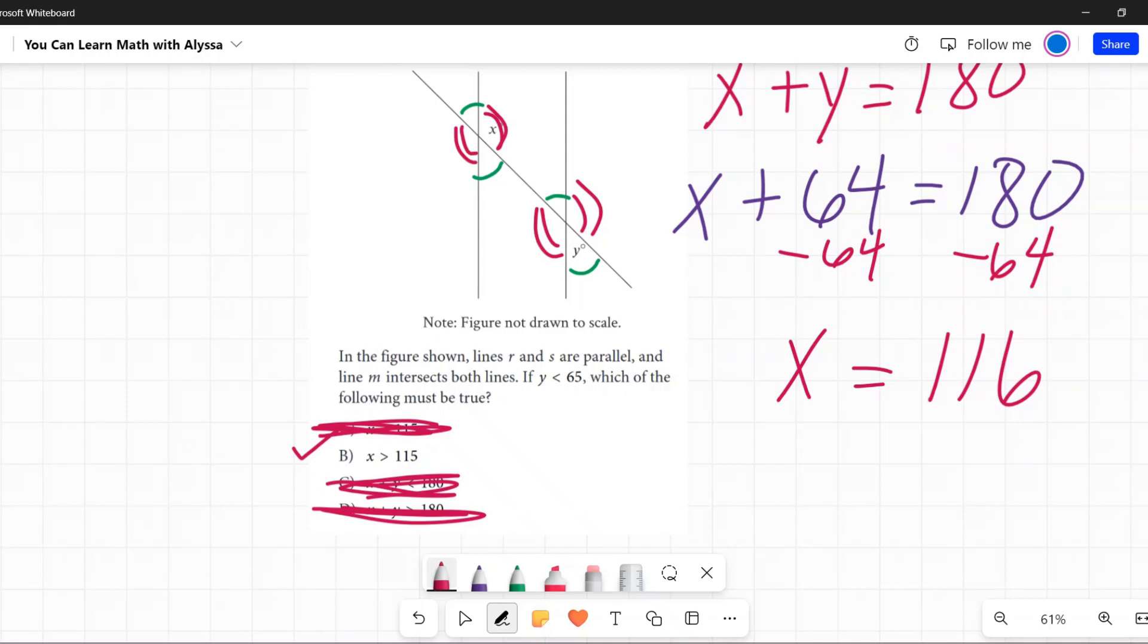You see, these are making up a line. So if y was less than 65, y could be all the way down to—y could be 10, y could be 5, y could be anything less than 65.